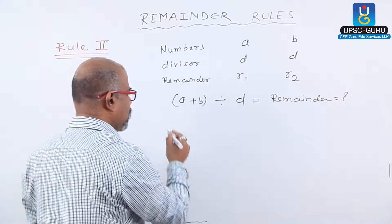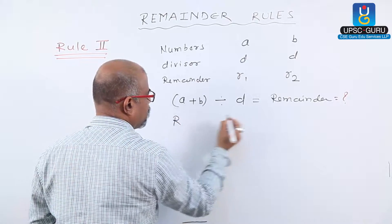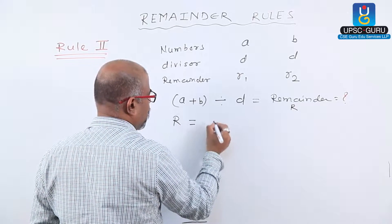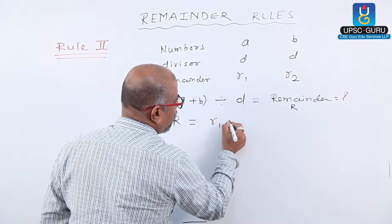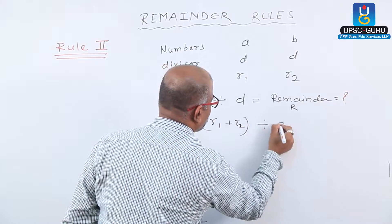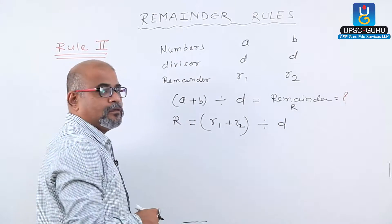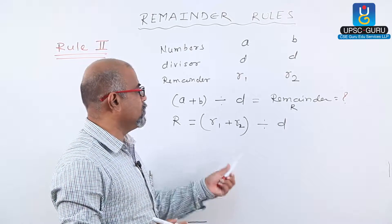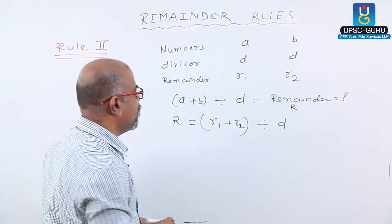This remainder R is obtained by dividing R1 plus R2 by divisor D. The required remainder R equals R1 plus R2 divided by D.